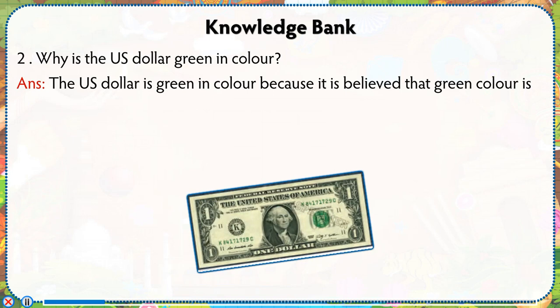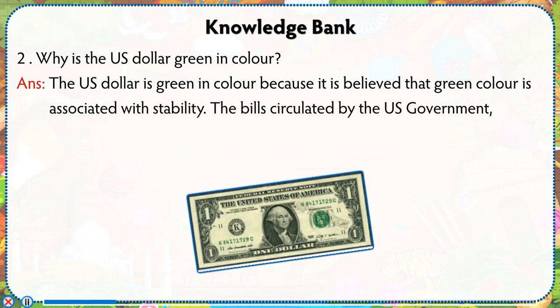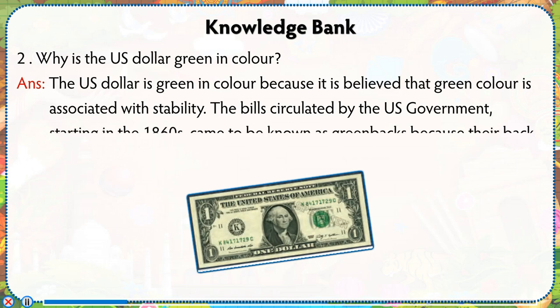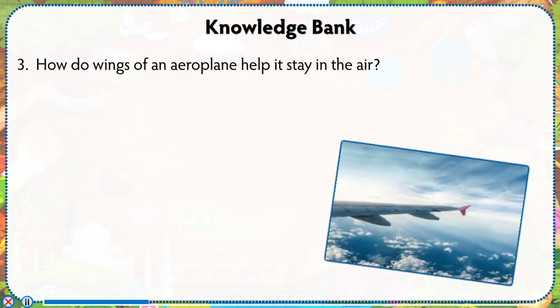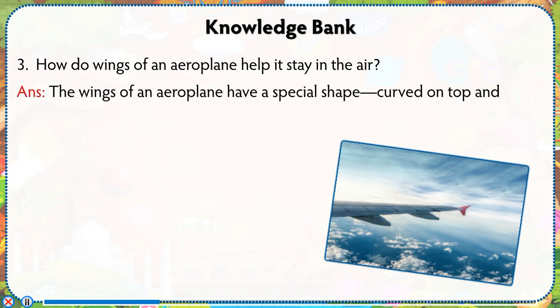Why is the US dollar green in color? The US dollar is green because green color is associated with stability. The bills circulated by the US government starting in the 1860s came to be known as 'greenbacks' because their backsides were printed with green ink.